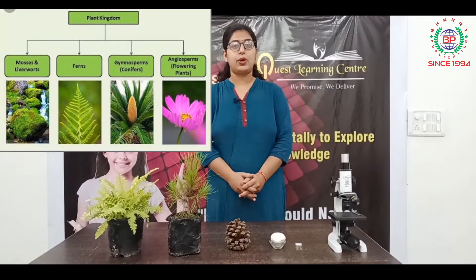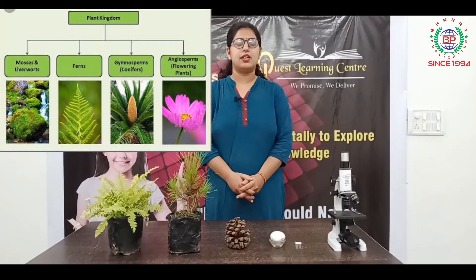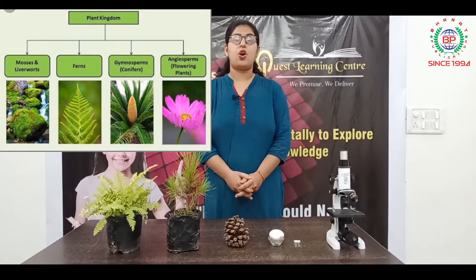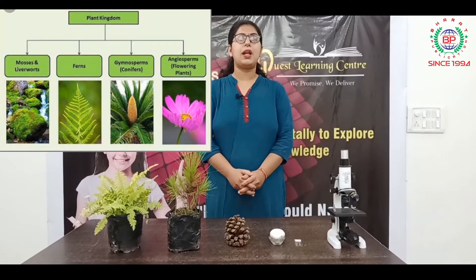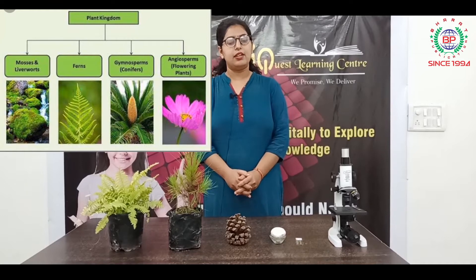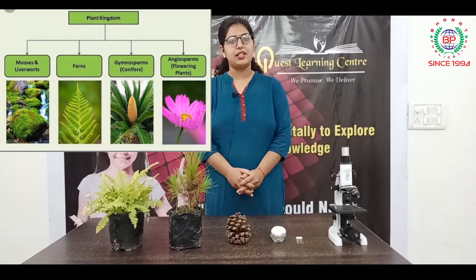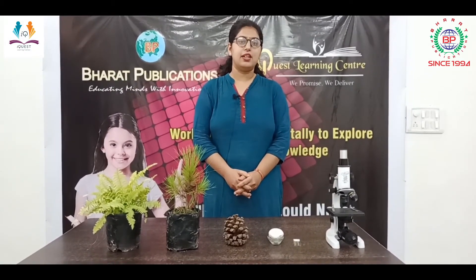In the aim you have seen many terms: fern, moss, Pinus, Spirogyra, angiospermic plants — what are these? These are the different divisions of the kingdom Plantae. The kingdom Plantae is divided into algae, bryophytes, pteridophytes, gymnosperms, and angiosperms. Spirogyra is an algae and the least developed plant. Today we are going to discuss one specimen from each division.